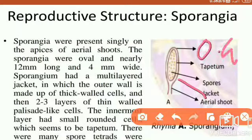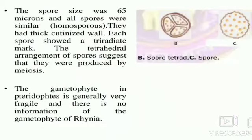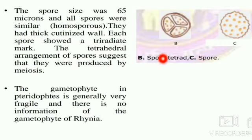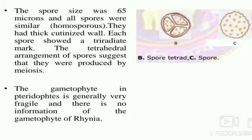This is the outer wall. When division occurs, this is a tetrad condition — when spores are produced they are arranged in spore tetrads. The spore size was 65 microns, and all spores were similar — homosporous condition is present in the case of Rhynia. Each spore has a triradiate mark, and the tetrahedral arrangement of spores is due to meiosis.